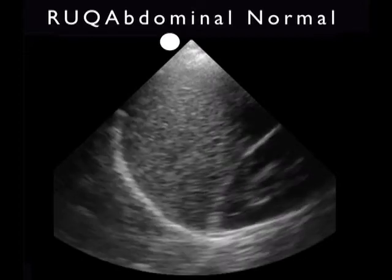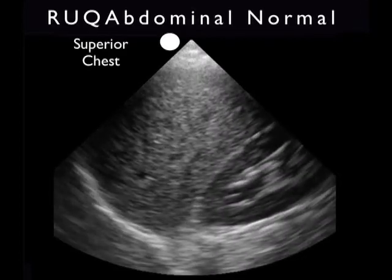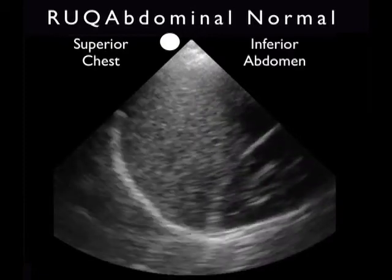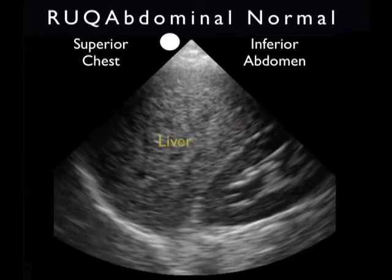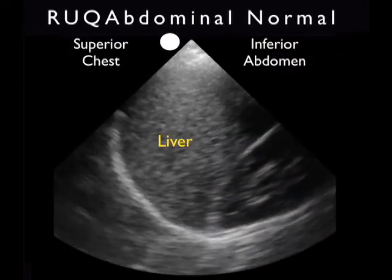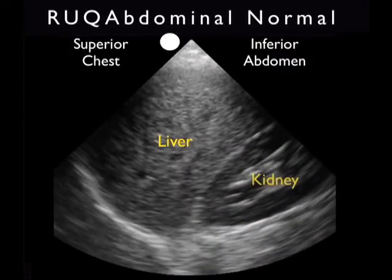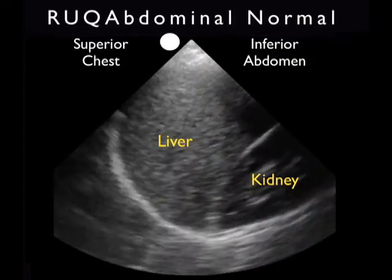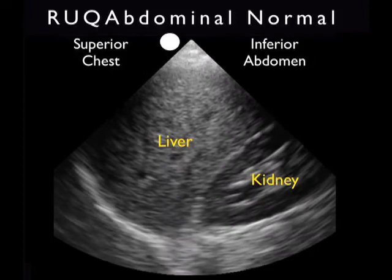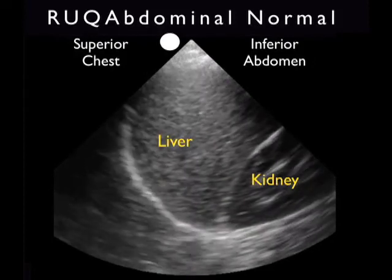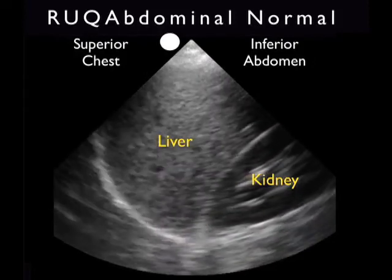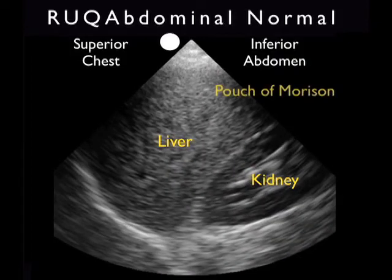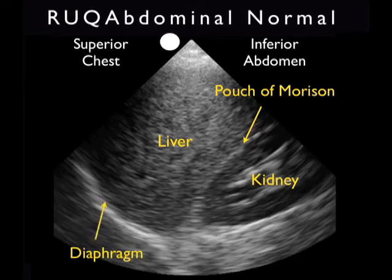Now that we know how to perform the right upper quadrant view of the trauma fast exam, let's take a look at a normal image that you might obtain. Remembering that this is a long axis view, I have the probe marker here positioned towards the patient's head. So towards the left of the clip is superior or chest cavity, and towards the right is inferior or abdominal cavity. Notice the first large structure that comes into view in the middle of the image is the liver, and to the right, or inferior to the liver, we see the football-shaped kidney. Now it's that interface between the liver and kidney that represents a potential space known as Morrison's pouch, where we'll be looking for dark, anechoic fluid collections. Note here we see a thin white line making up a normal exam and representing the fat within the capsule around the kidney.